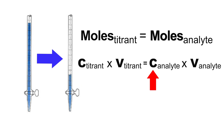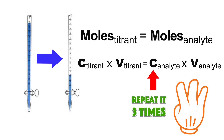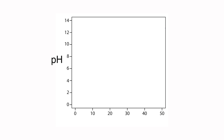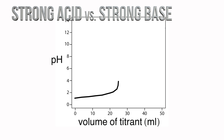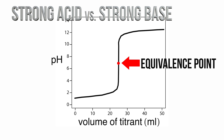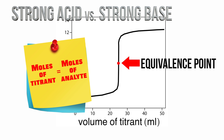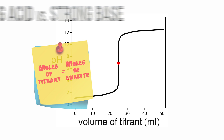Remember to repeat the whole process at least three times to ensure an accurate result. During an acid-base titration, the pH can be plotted as a function of the volume of the titrant added. The titration of a strong acid with a strong base produces a characteristic titration curve. The inflection point on the curve is called the equivalence point — where the moles of titrant added are equal to the moles of the analyte. The titration curve has a steep slope around the equivalence point.